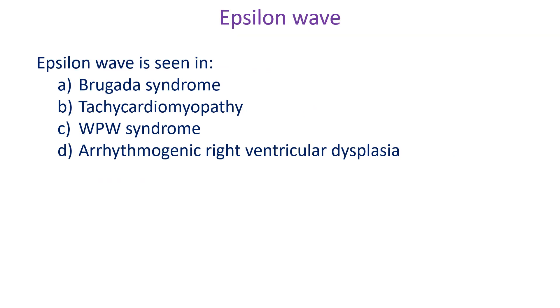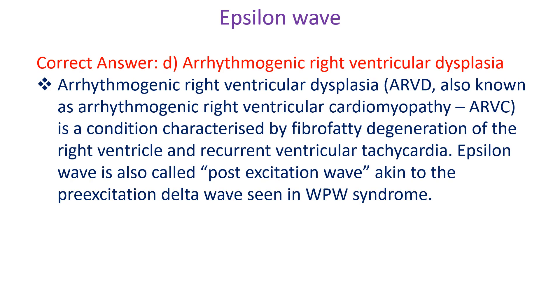Epsilon wave is seen in: A. Brugada syndrome. B. Tachycardiomyopathy. C. WPW syndrome. D. Arrhythmogenic right ventricular dysplasia. Correct answer: D. Arrhythmogenic right ventricular dysplasia.